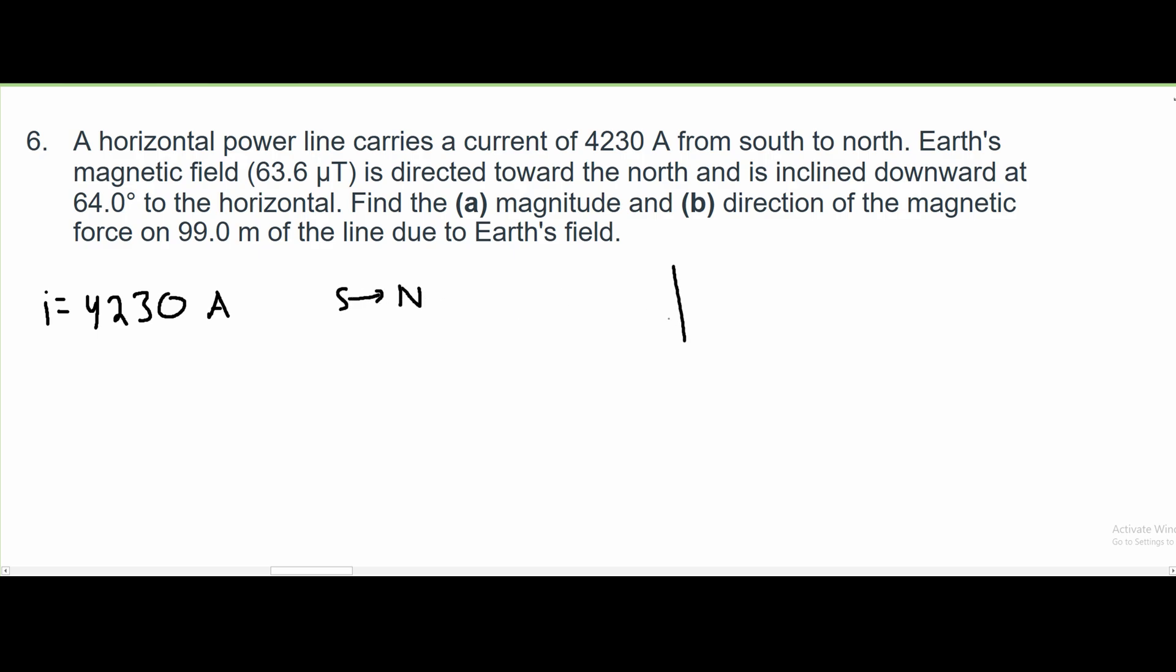If we draw a compass right here, we have north, east, south, and west. Our magnetic field is directed towards the north and is inclined downwards. So if it's directed up north but inclined downwards, it'll be at 64 degrees.